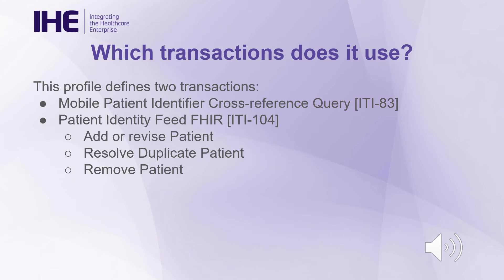This profile defines two transactions. The mobile patient identifier cross-reference query transaction is used by the patient identifier cross-reference consumer to solicit information about patients whose patient identifiers cross-match with the patient identifier it provides in the request message. The request is received and processed by the patient identifier cross-reference manager, which returns a response including zero or more patient identifiers for the matching patient. The patient identity feed transaction communicates patient information, including demographic data, after a patient's identity is established, modified, or merged, or after key demographic data has been modified. In addition, the removal of a patient identity in the source patient identifier domain may be communicated.